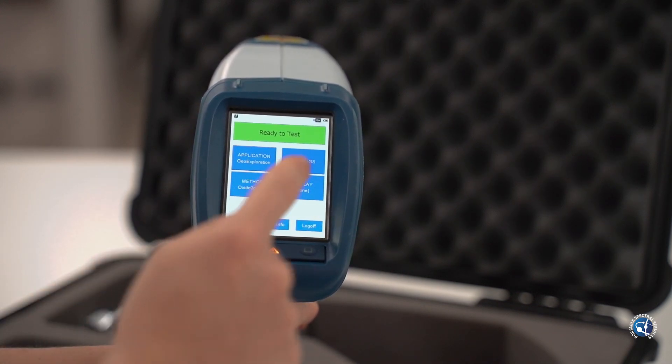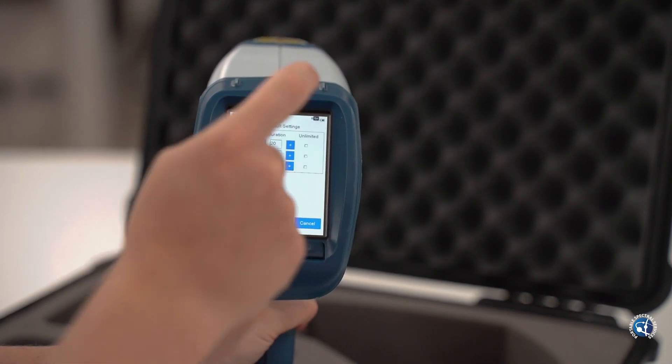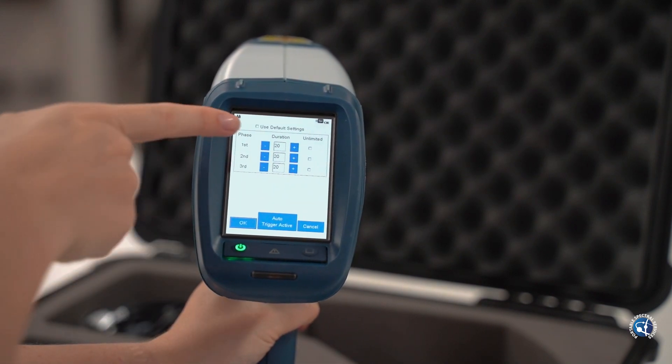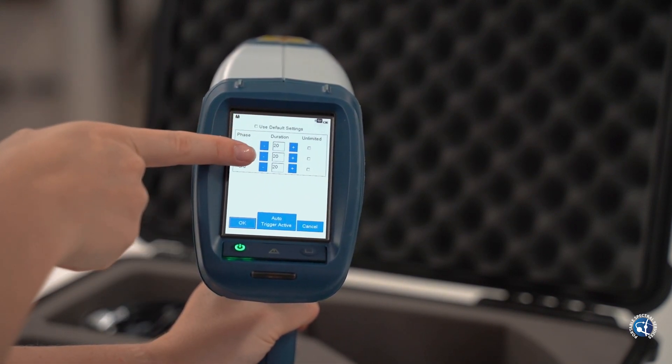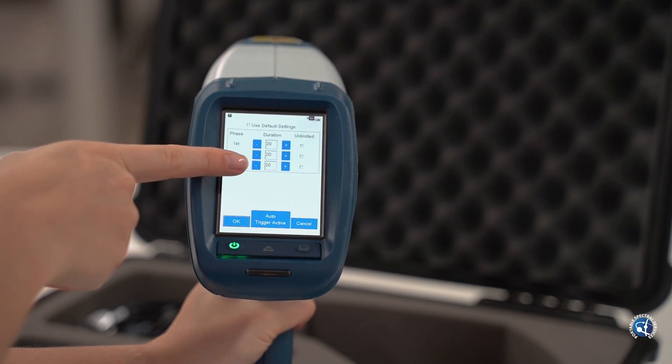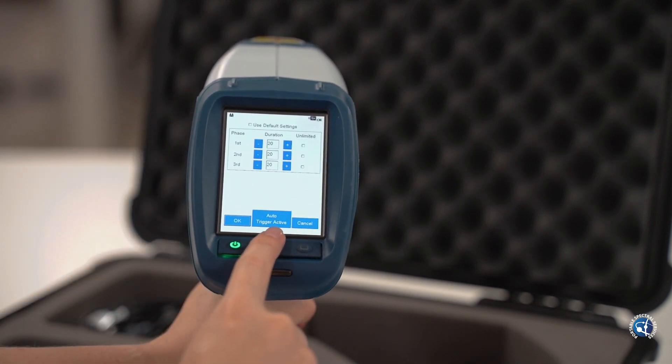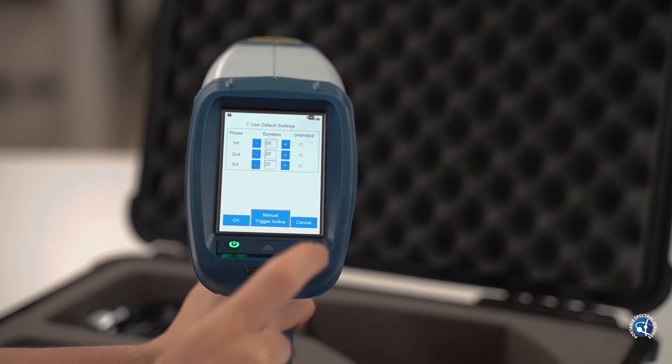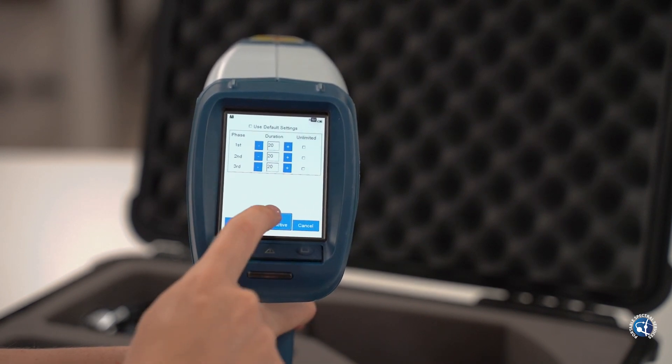From here check the settings and ensure that the beam times are at the recommended length. For example, for geo-exploration we recommend 20 seconds per beam as this allows full acquisition of all the elements in that calibration. Anything shorter than this will not be a reliable result.